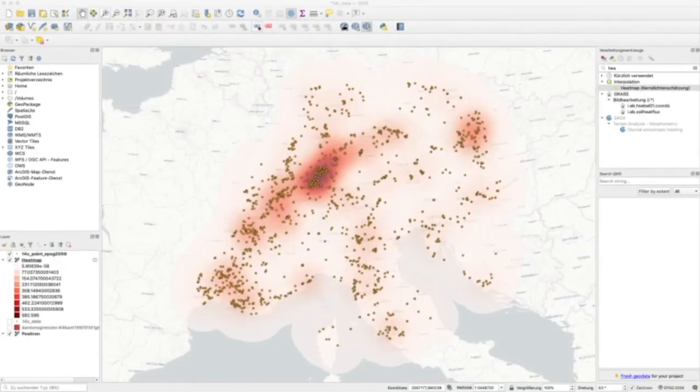Last time we produced this visualization of the point pattern from the C14 dates. In this video, I would like to show you a more formal approach to analyze the patterns within these data. We can see already from the display of the points, but probably more clearly from the heat map, that there is some clustering going on and other areas are much less dense or occupied.